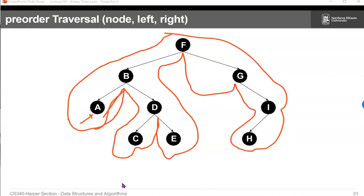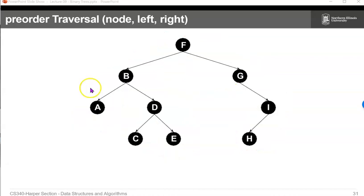This says preorder traversal, but unfortunately, that's not what I was intending to do. I did that on the inorder traversal. So, now, let's do a preorder traversal, which is node first, then left and right.